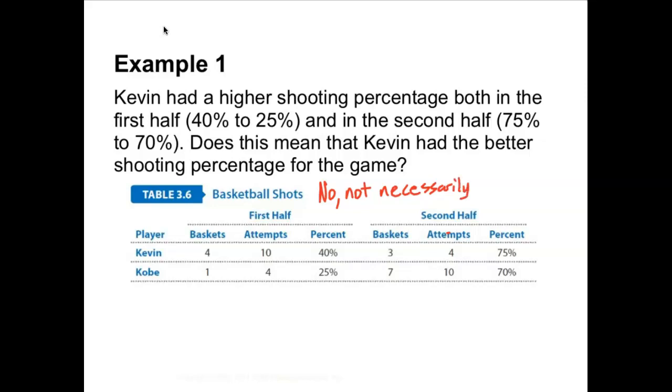What we want to look at is the attempts. We can look at Kevin's percentage for the game by totaling up the number of baskets he made versus baskets attempted. He made four in the first half and three in the second half, so that's seven overall out of a total of 14, so Kevin has seven out of 14 or 50 percent shooting. But Kobe had one basket out of four attempts in the first half and seven out of ten in the second, so he made eight for the game out of 14, which is 61 percent.